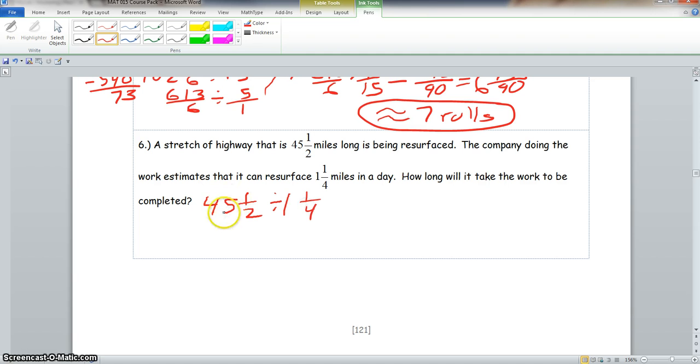So we would change these mixed numbers to improper fractions. So it would be 91 over 2 divided by 5 over 4. So now we would take 91 over 2 times 4 over 5. Now we take the prime factorization. Now, 7 can go into 91. It would be 7 times 13, and 4 breaks down to 2 times 2.